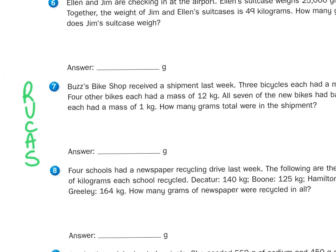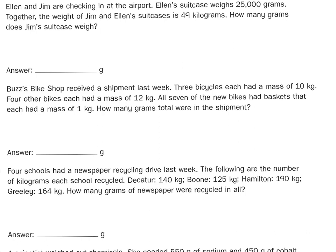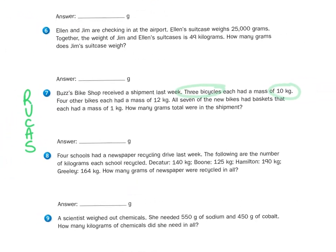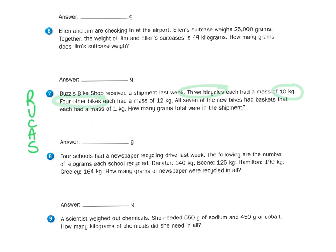We're going to reread it. We're going to underline the question, circle the important parts, come up with an action plan, and then solve it. So once again, Buzz's bike shop received a shipment last week. Three bicycles, each had a mass of 10 kilograms. Four other bikes had a mass of 12 kilograms. And all seven of the new bikes had baskets that each had a mass of 1 kilogram. How many grams total were in the shipment? So that's a lot of bicycles and equipment.